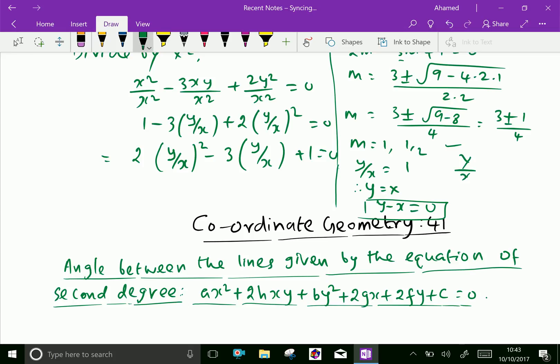And second one, y over x equal to half, then cross multiplying 2y equal to x, and 2y minus x equal to 0 is the second equation.